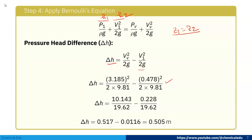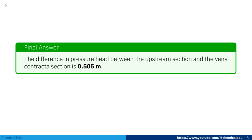Calculating, Δh = 0.505 m. So the final answer is: the difference in pressure head between the upstream section and the vena contracta section is 0.505 m.